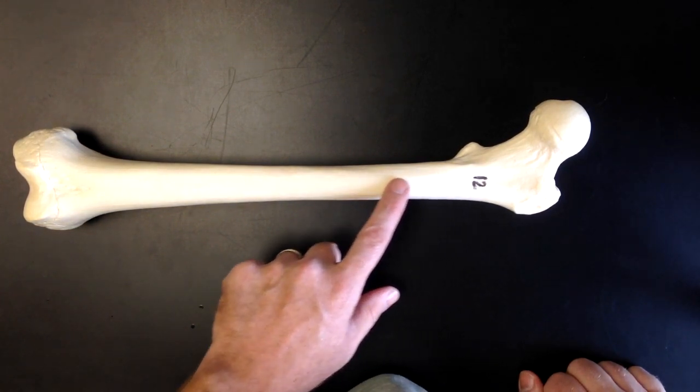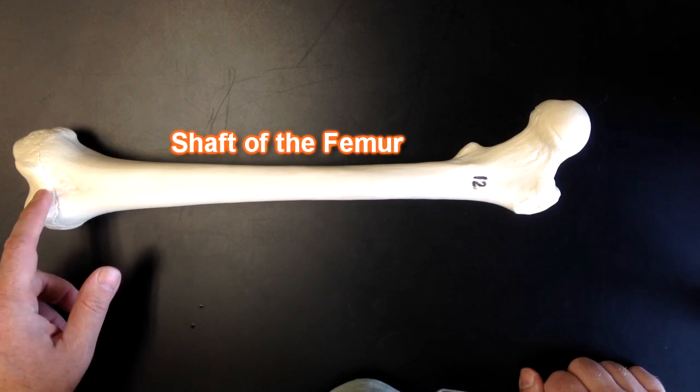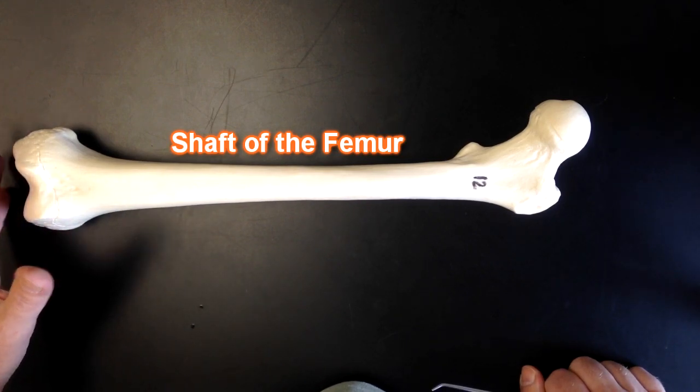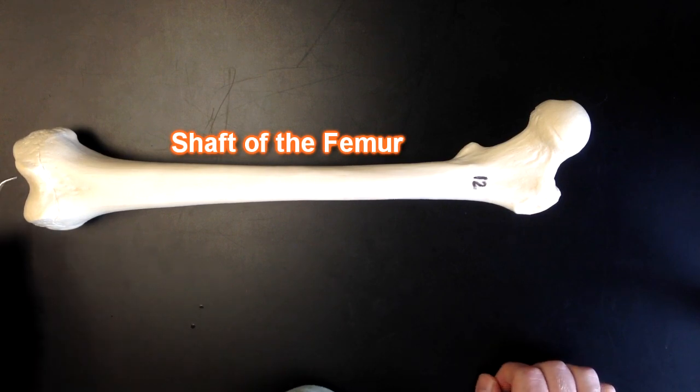Okay, this would be the shaft of the femur and going down to the distal end of the femur, the end that's closest to the knee, we can see a smooth surface right here.